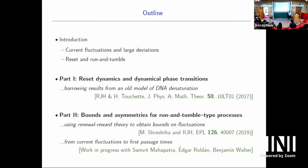So here's where we're going. I'll start with an introduction giving a fairly gentle overview of some ideas from non-equilibrium: current fluctuations and large deviations, reset — we've heard a lot about that — and what reset has to do with run and tumble. There'll be two main parts: part one on reset dynamics and dynamical phase transitions, borrowing results from a very old model of DNA, and depending on time, part two on run-and-tumble processes, bounds, and symmetries.